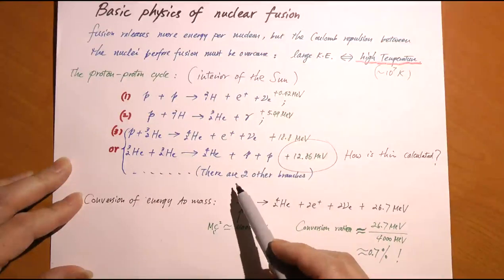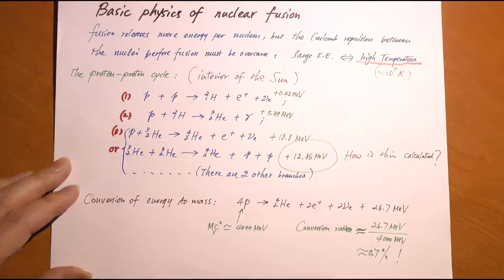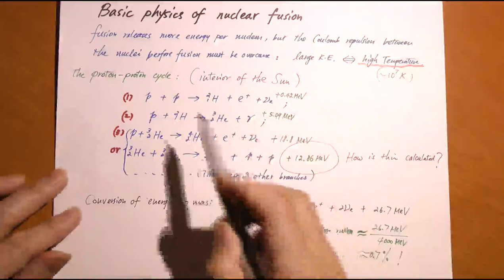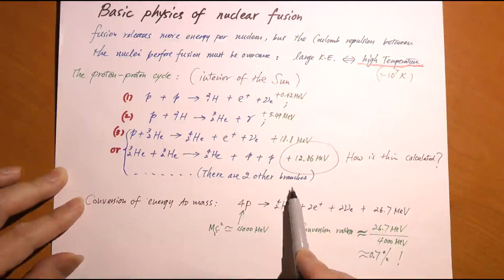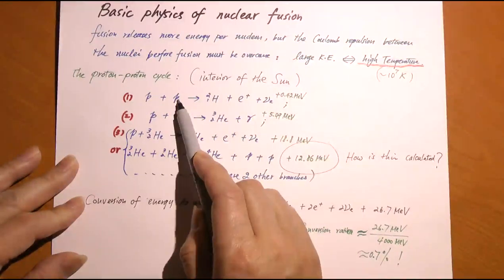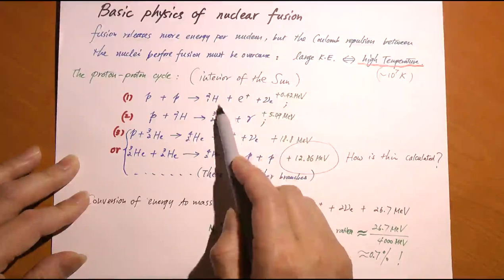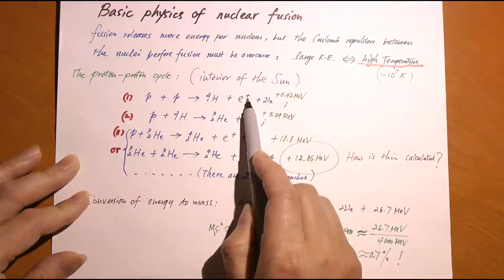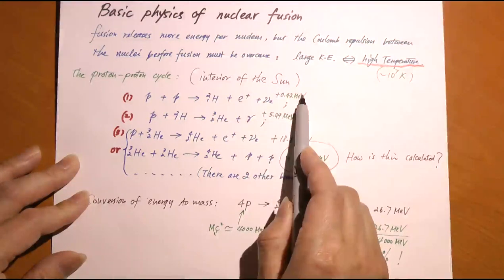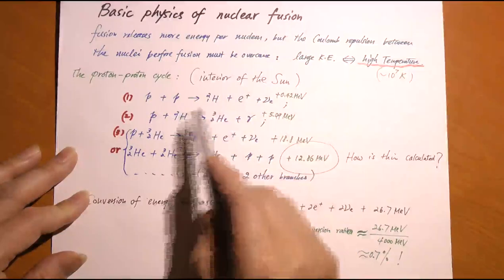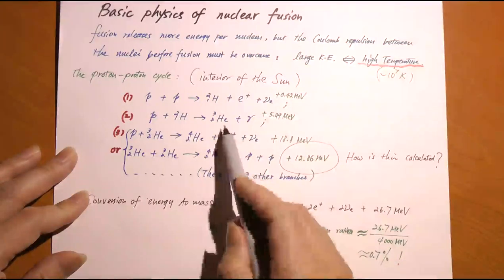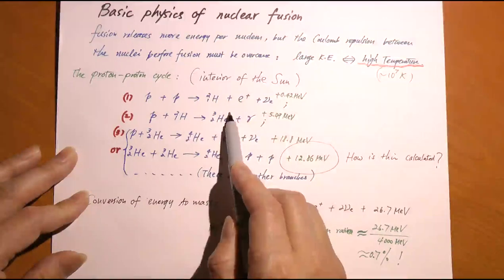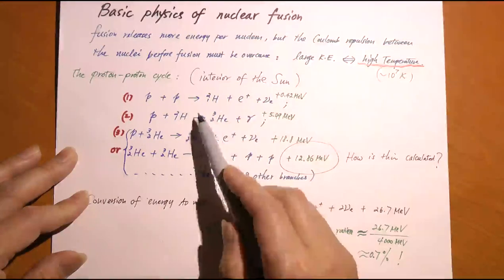The proton-proton cycle is the most famous nuclear reaction sequence by which the Sun produces its energy. The Sun is essentially a huge nuclear furnace producing energy through nuclear fusion, not fission. In the proton-proton cycle, you start with two protons—they fuse together to produce deuterium, which has one neutron and one proton. Since you have two protons but need only one, you release an extra positron plus an anti-electron neutrino. Then deuterium combines with another proton to produce helium-3, and a gamma ray is emitted.